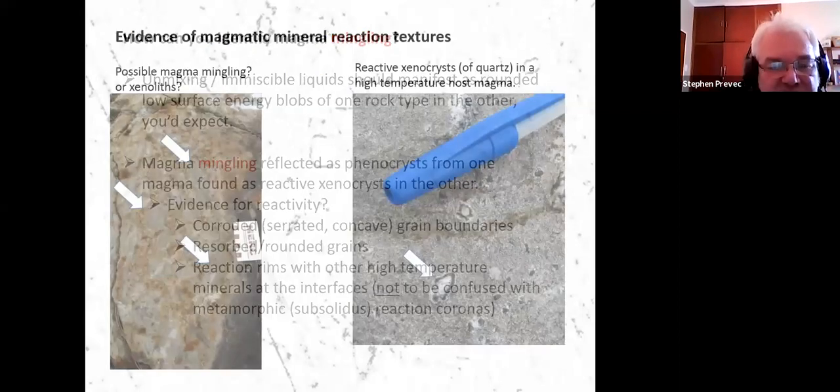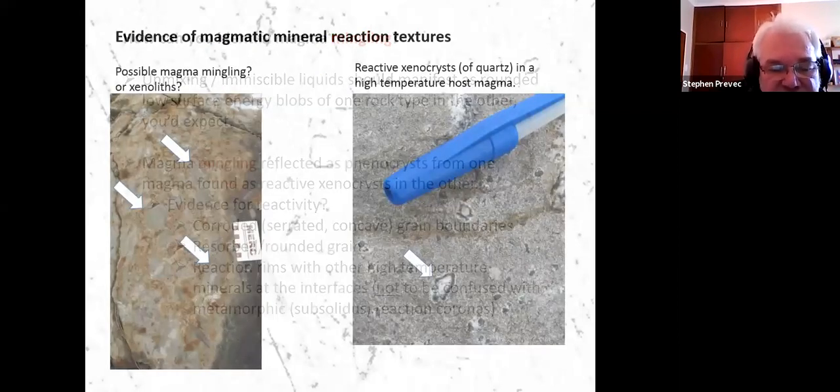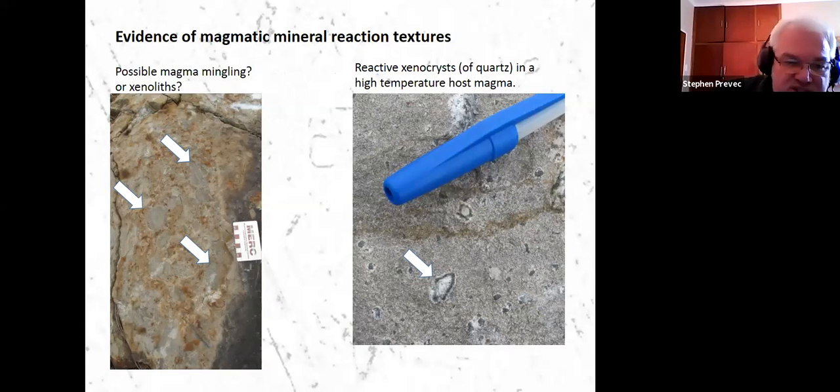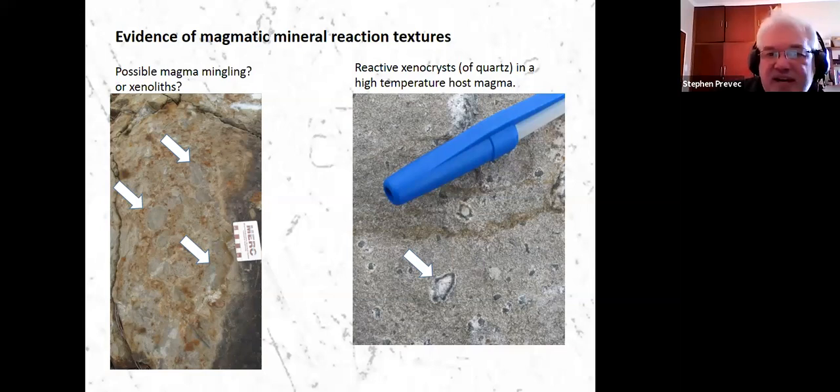So the picture on the left shows, this is again from Sudbury from the offset dykes where we see rounded blebs of the relatively inclusion free. So these are little gray ovals hosted in a sulfide rich inclusion bearing quartz diorite. So these have been interpreted by some workers as xenoliths of the original quartz diorite, which had been torn off and then rounded by transport, but they could equally be representing potential immiscible liquid interactions. And the picture on the right shows us quartz grains hosted in the quartz diorite. So these are superheated impact melts. So they are thought to be in the neighborhood of 16, 17, 1800 degrees Celsius.